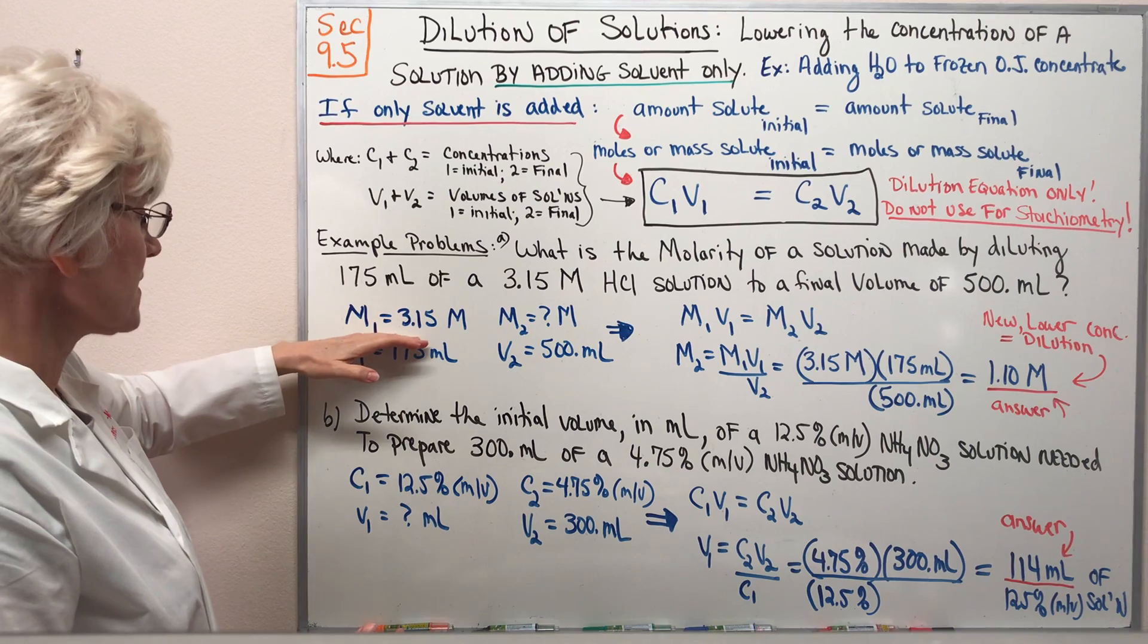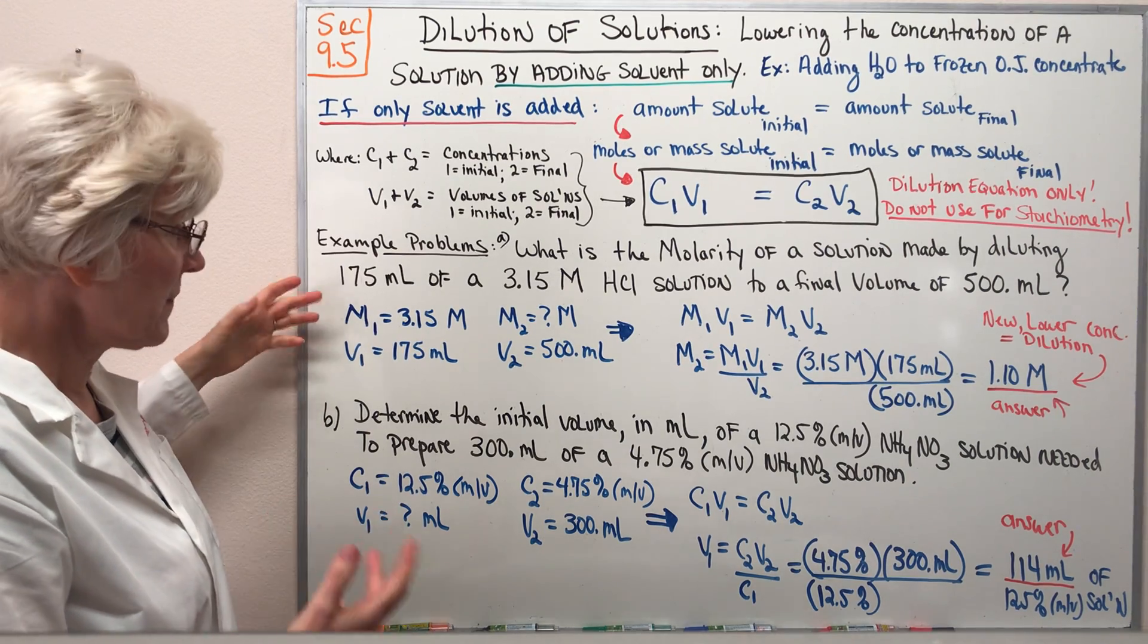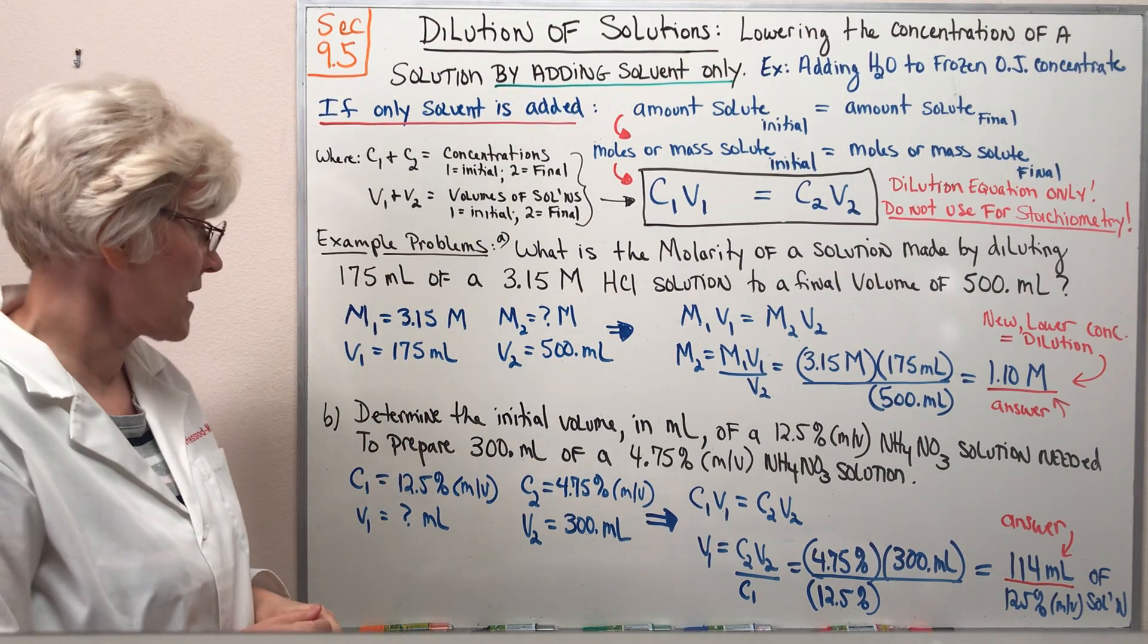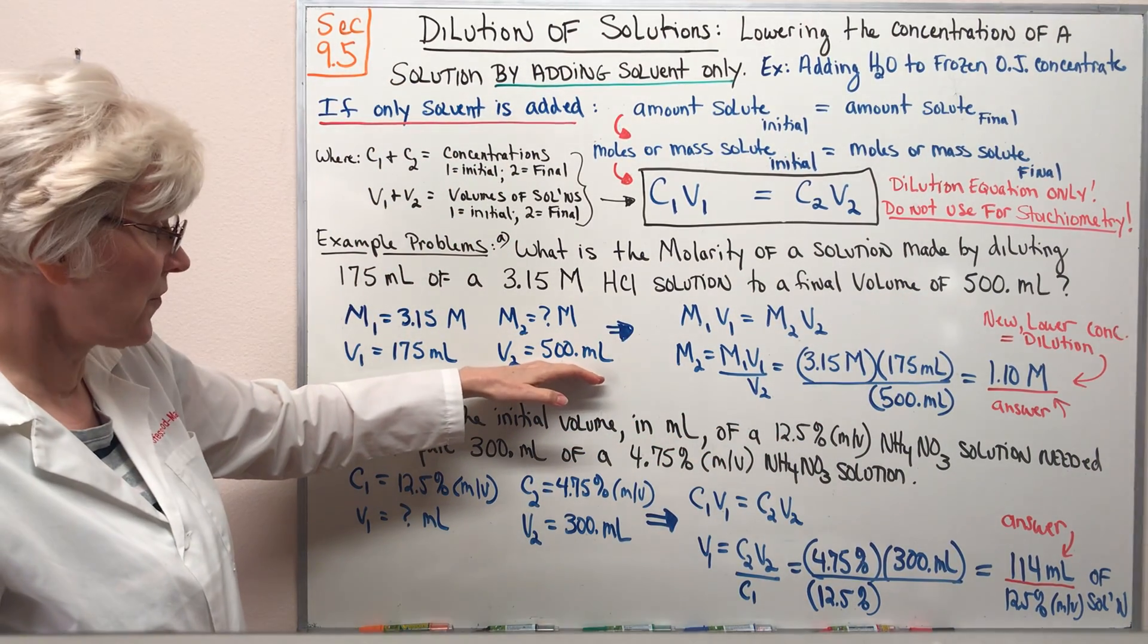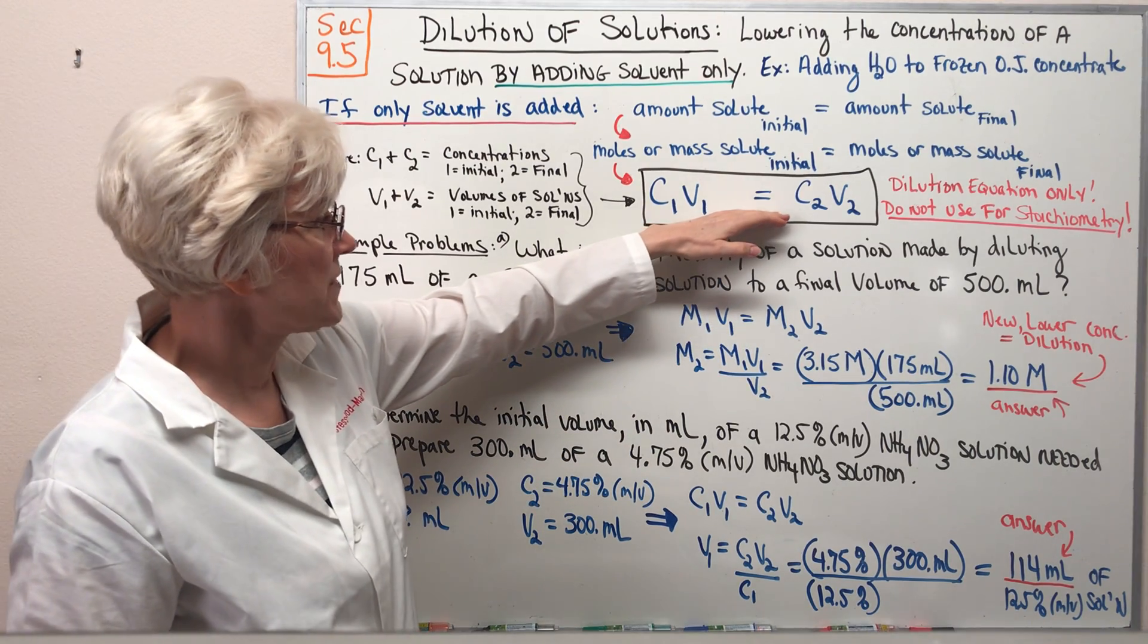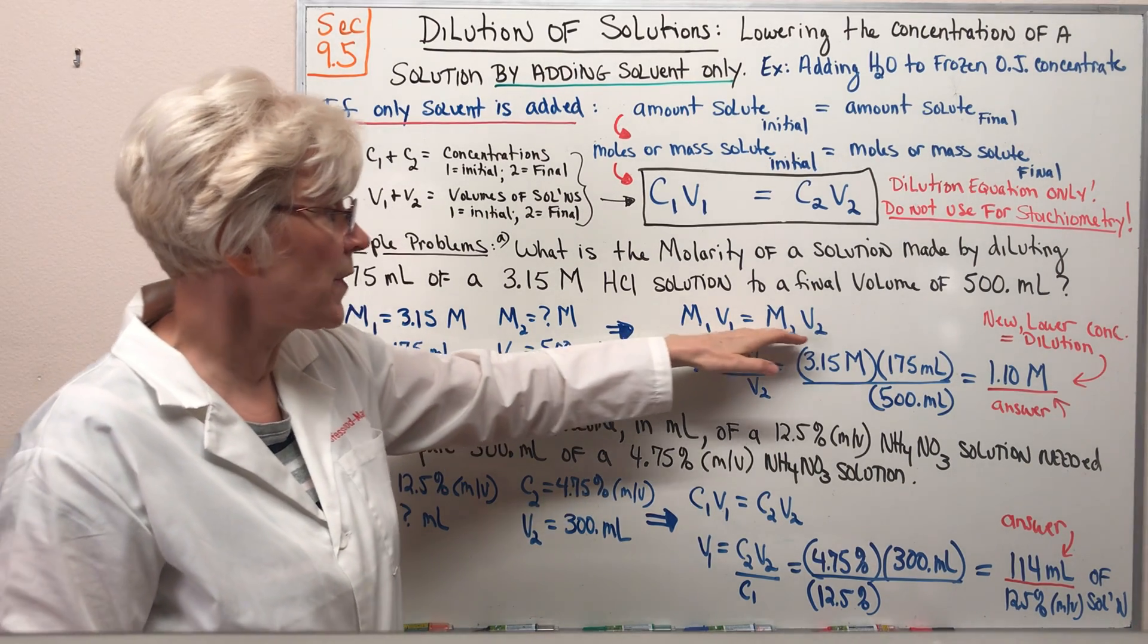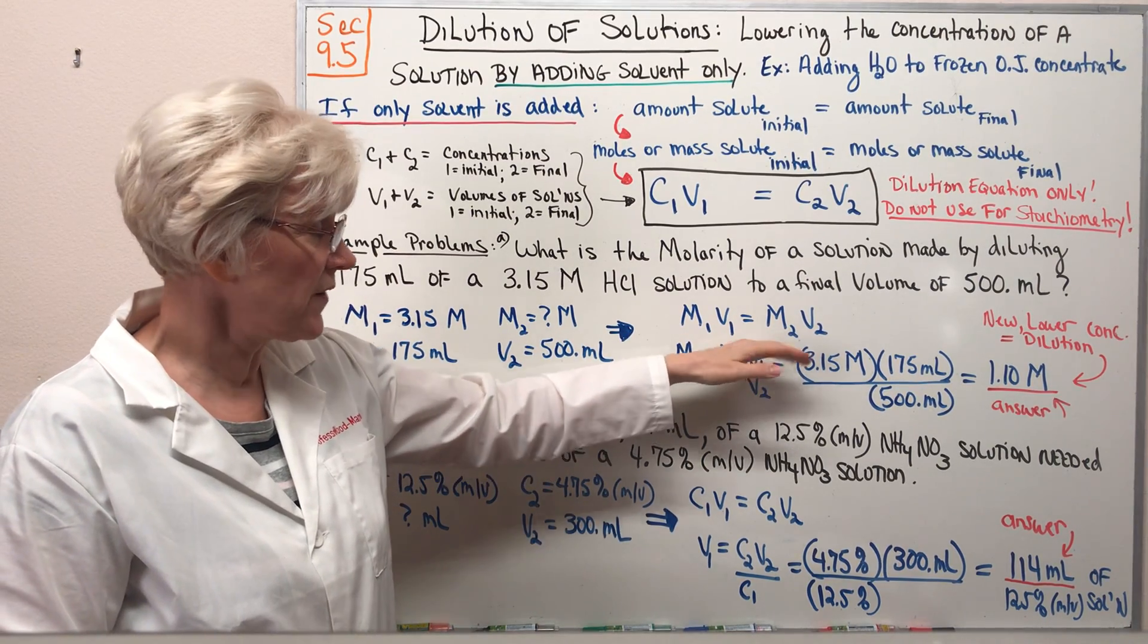Our initial molarity is 3.15 M. So I'm labeling that M1 because in this instance our concentration is a molarity. Our initial volume is 175 mL. We add water until we have a new larger total volume of 500 mL. What will our new molarity be? So notice I've taken our C1V1 equals C2V2 and just substituted molarity in for concentration since that's what we're looking at. M1V1 equals M2V2 and we're solving this for M2.